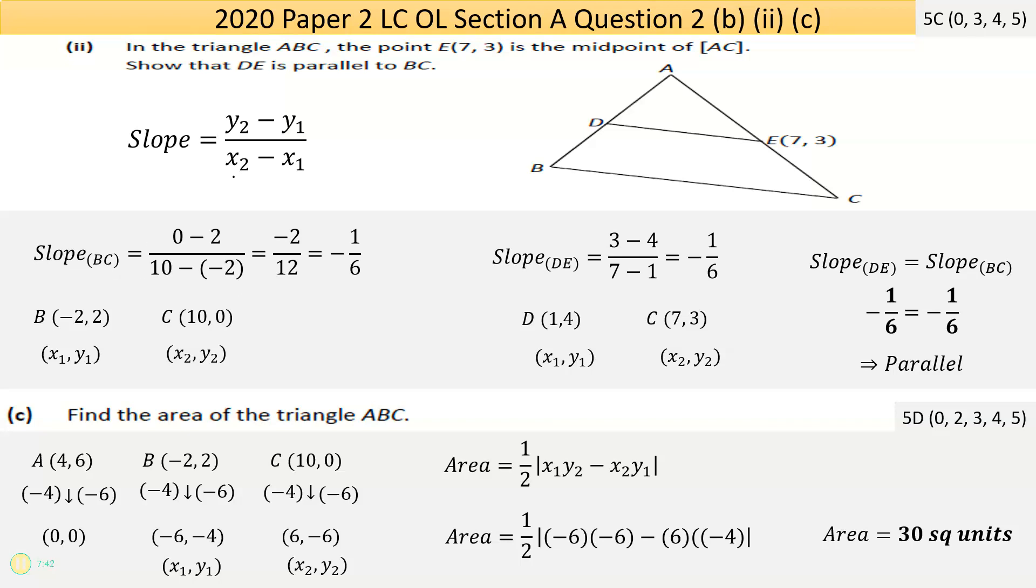I find the slope of BC first. I have my slope formula, I have my points B and C, I label them first x, first y, second x, second y, and substitute them in. I could use the calculator or just work it down. 0 take away 2 is negative 2, 10 take away negative 2 is 12. Simplified, that's negative 1 sixth. I found the slope of DE. The two slopes were equal, therefore they must be parallel.